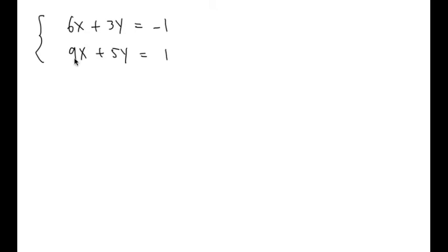We have 6, 3, 9, and 5, so you can pick a variable, either x or y, to get rid of first. It doesn't matter, but let's get rid of x. What we're going to do is look for the LCM, the lowest common multiple of 6 and 9.